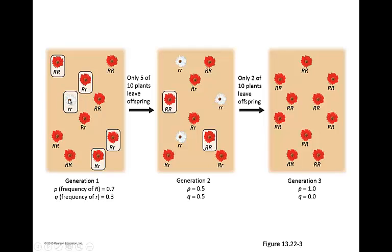You can see they're both relatively healthy. Now let's say just by chance, only the ones that are circled happen to be able to leave offspring. When we're looking at this particular population, you can see now that P and Q are actually quite a bit closer to one another — there are quite a lot of lowercase r's here. Now let's say only these two were able to leave offspring, just by chance, because this is a small population.